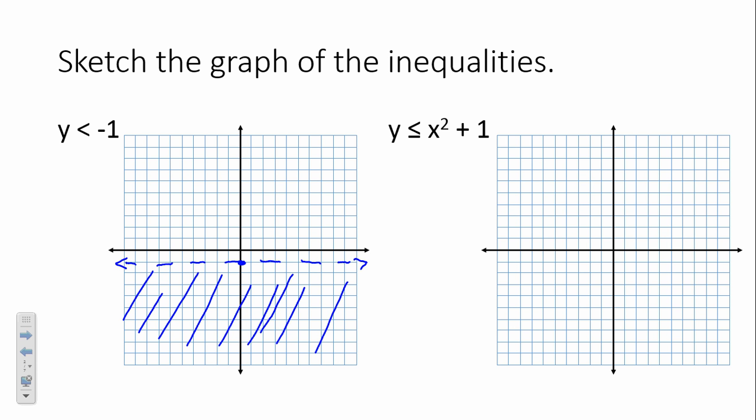The next example is not much different, only instead of a single variable we now have two variables. If this was y equals x squared plus 1, you would graph a quadratic — a parabola shifted up 1, wouldn't you?